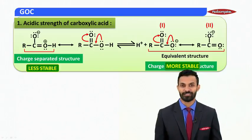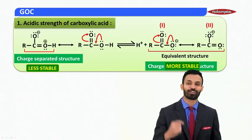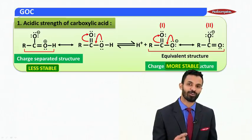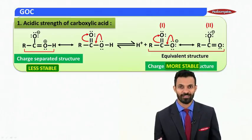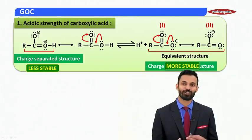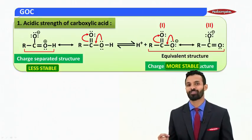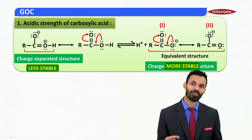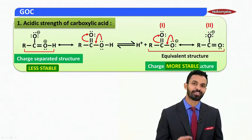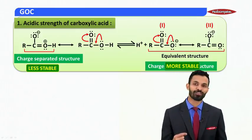The more stable the conjugate base, the stronger the acid from which it is obtained. Similarly, if you work on sulfonic acid or phenol, you will find that charge-delocalized resonating structures are more stable due to the phenomena of resonance. Thus, the phenomena of resonance can justify the acidic strength of compounds.